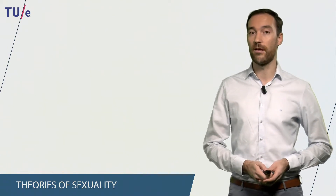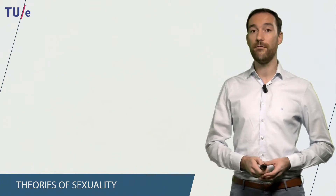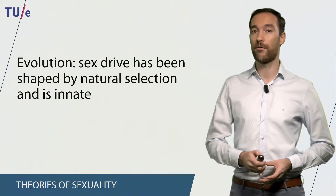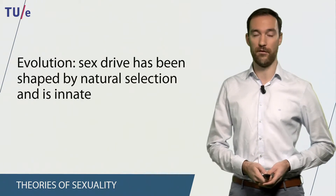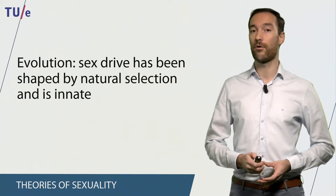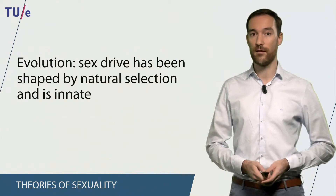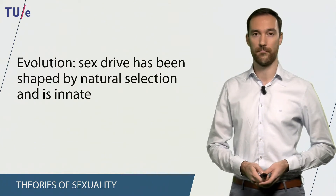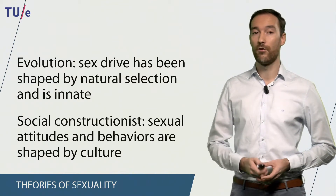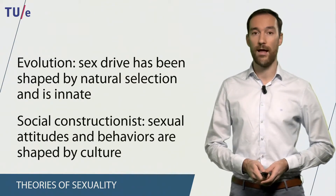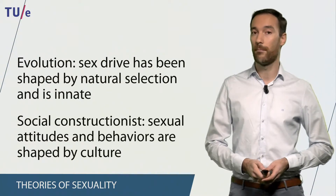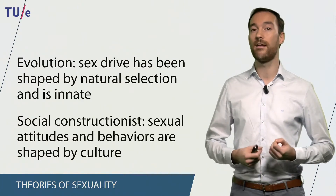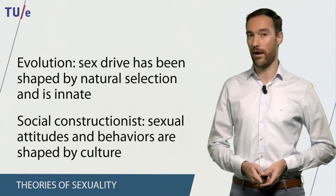The last part of today's web lecture is sexuality. Different theories exist about where sexuality comes from. The first is the evolutionary explanation, which states that our sex drive has been shaped by natural selection and is therefore innate — we are born with this. In contrast, social constructionist theory states that our sexual attitudes and behaviors are shaped by culture, so our sexual behavior is influenced by the experiences we have throughout our lives.